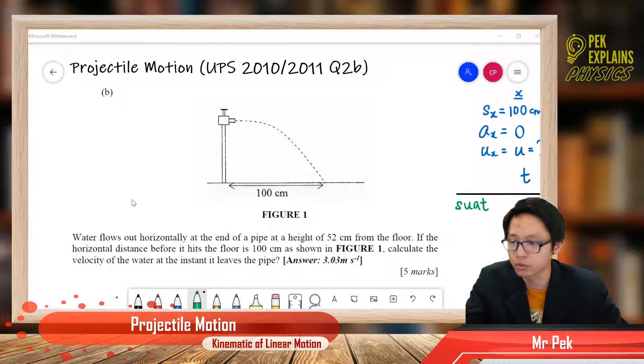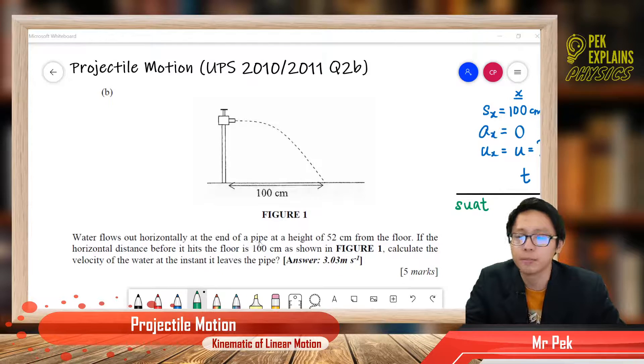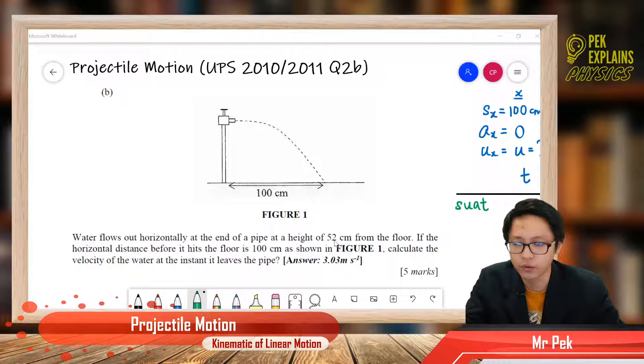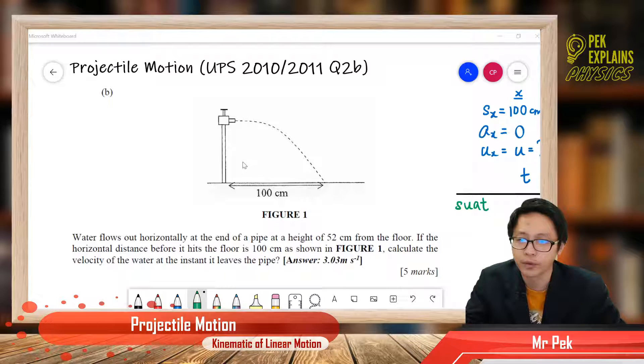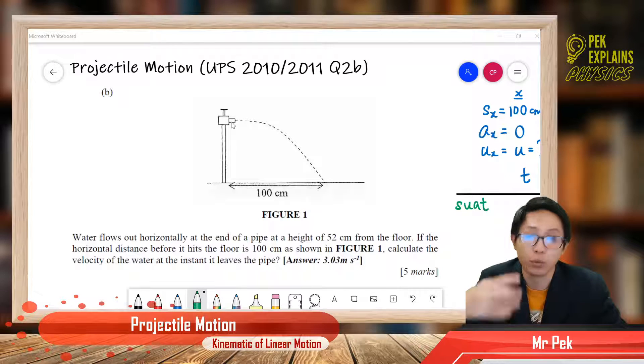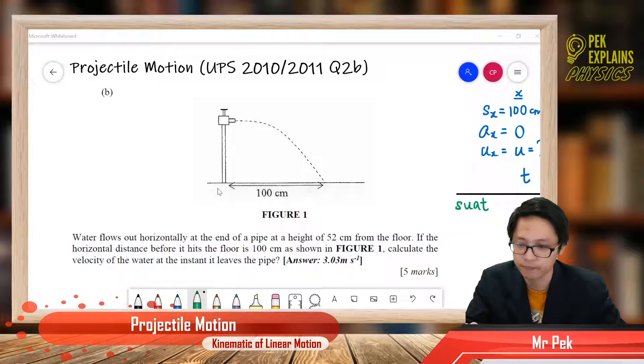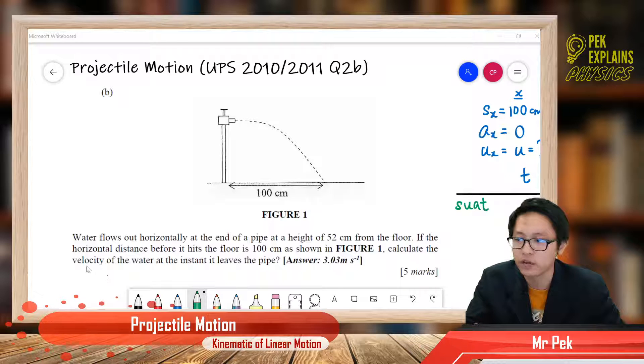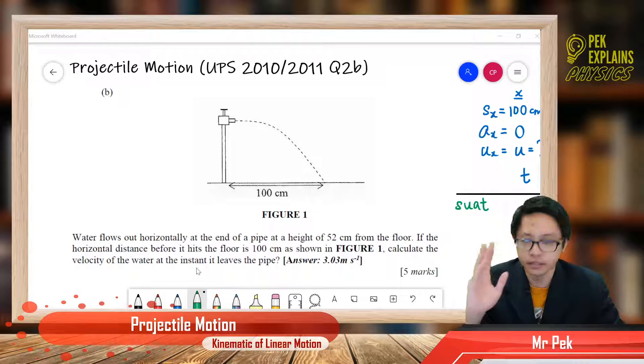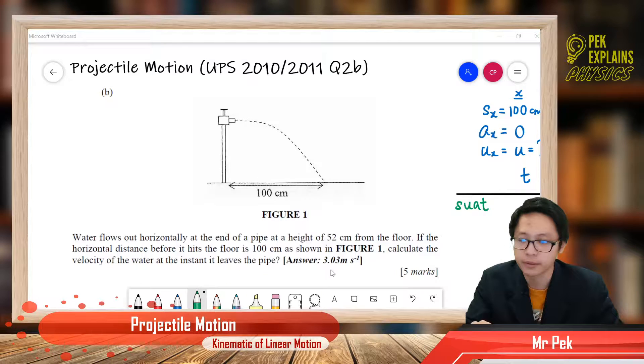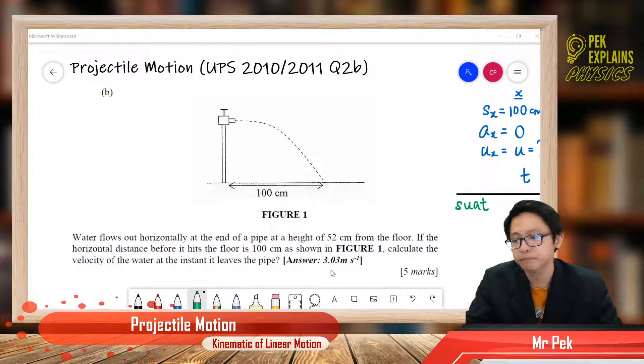Let us read the question together. Water flows out horizontally at the end of a pipe at a height of 52 cm from the floor. If the horizontal distance before it hits the floor is 100 cm as shown in figure 1, calculate the velocity of the water at the instant it leaves the pipe. The given answer is 3.03.